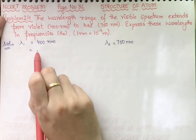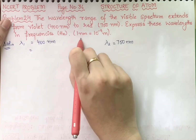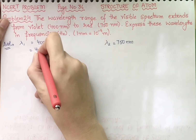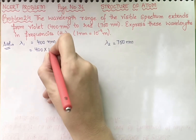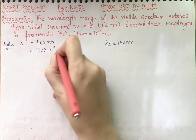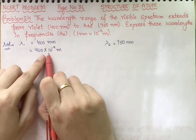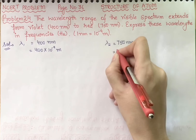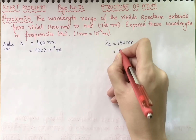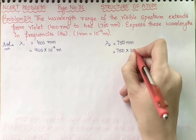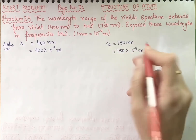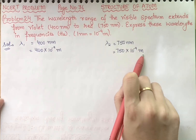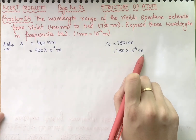Now we have to convert nanometers into meters. We know that one nanometer equals 10 raised to power minus 9 meter, so 400 into 10 raised to power minus 9 meter is our first wavelength in meters. Similarly, 750 into 10 raised to power minus 9 meter is the second wavelength converted into meters. Now we will apply the formula to find the frequency.